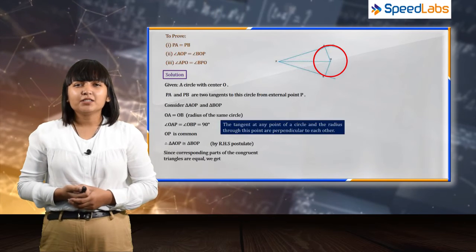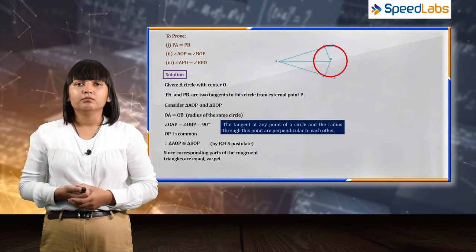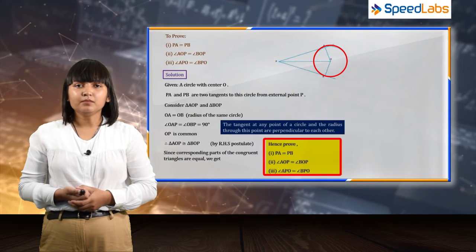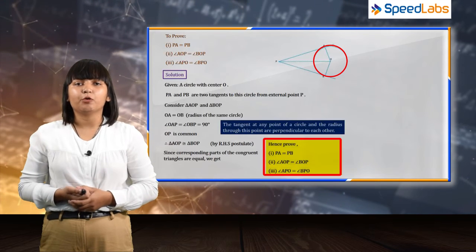So, by RHS criteria, we can say that the triangles are equal and congruent and hence, we have proven the following three points.